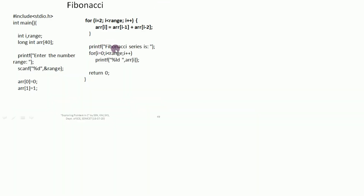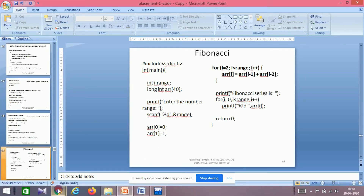To print the array: loop from i=0 to the maximum range, printing ar[i] each iteration. When i=0 it prints ar[0], when i=1 it prints ar[1], up to ar[10] for range 10. I include a space between numbers; if you want newlines, use a backslash n. That's how the Fibonacci series logic works. I'm not taking it to the compiler to save time.